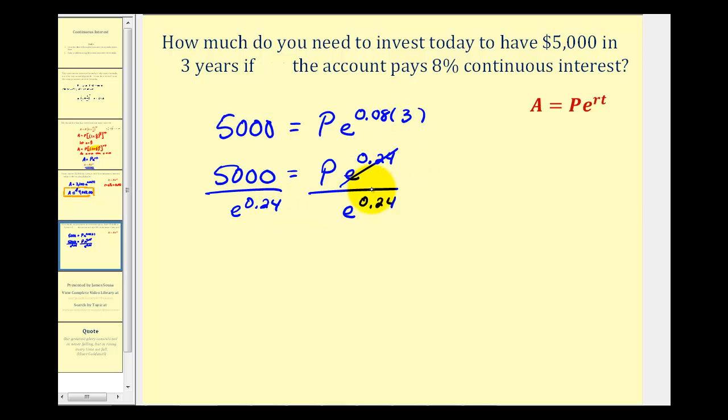Notice on the right side, this simplifies to one. So P, or the starting amount, must be equal to this quotient here.